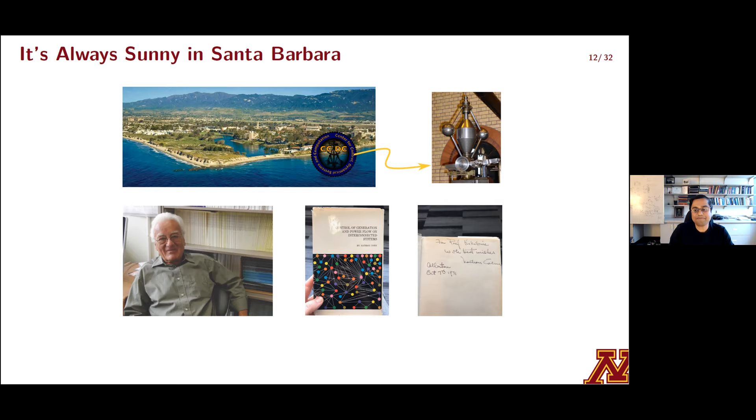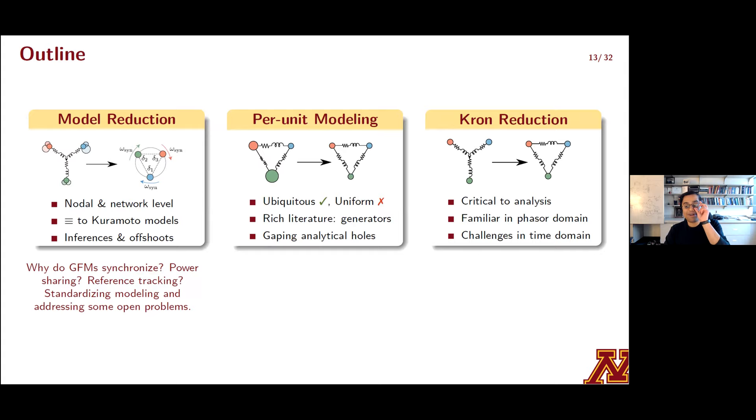So a quick check on where we are at and where we're headed. So we've looked at methods to reduce model complexity at nodal and network levels for grid-forming inverter-based resources. And in the extreme, we recovered this Kuramoto-type dynamics that helped us answer some very fundamental questions. Along the way, I indicated that there were two stumbling blocks. One was on per-unit modeling and the other one was on Krone reduction in this very specific case where the R over L ratios of transmission lines are not all the same. And we'll take a deeper dive into both of these. We'll start with per-unit models.